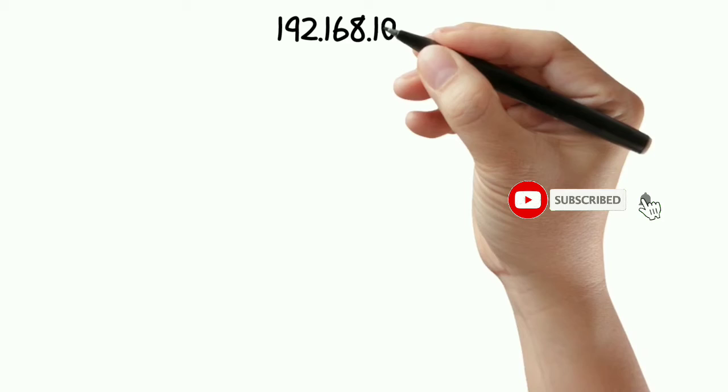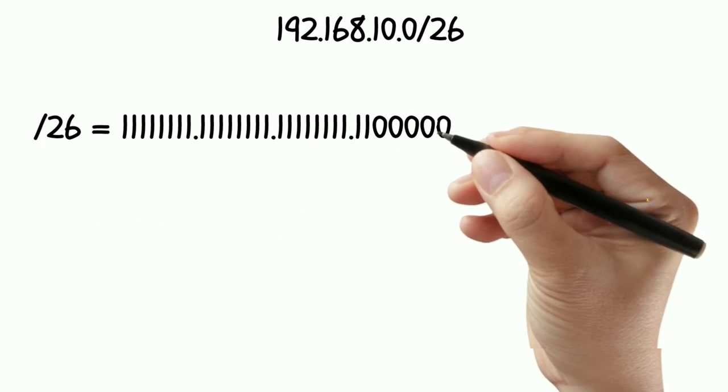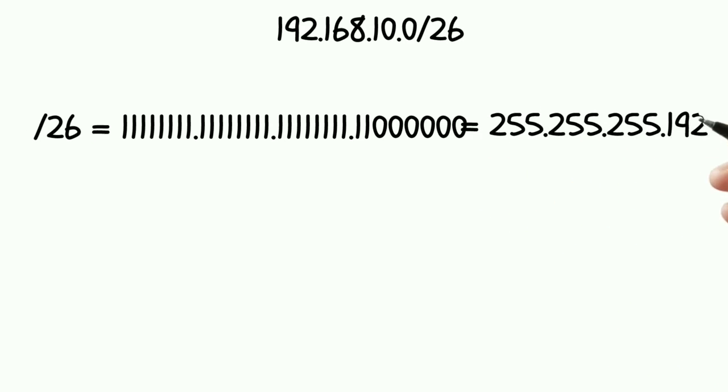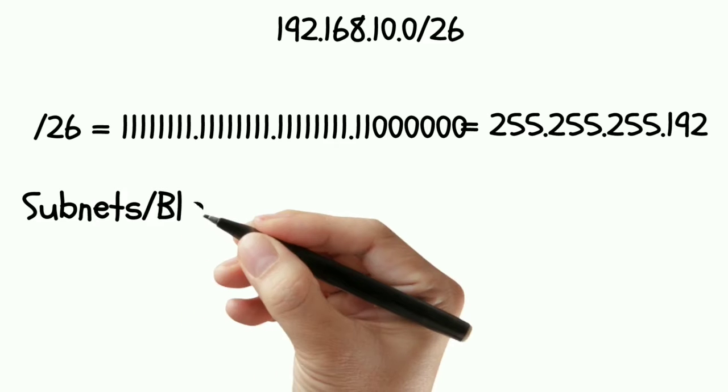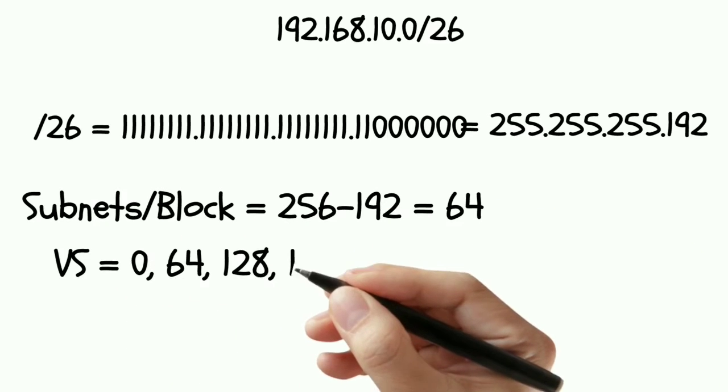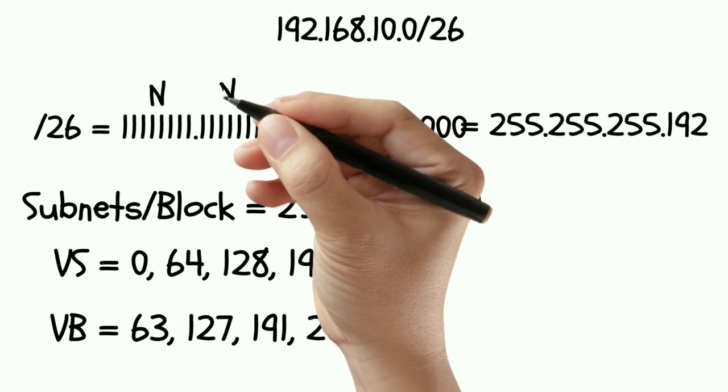I have taken an IP address along with CIDR. CIDR is then written in a 32 bit format. Then we calculate the subnets or block. Then we write the valid subnets and valid broadcast.